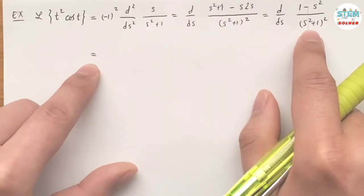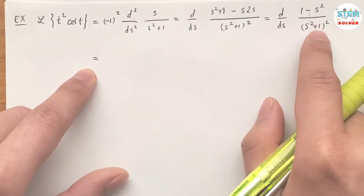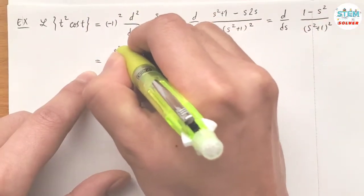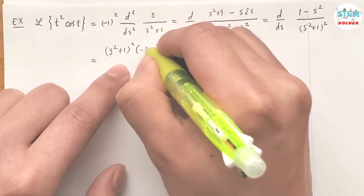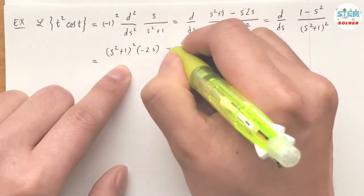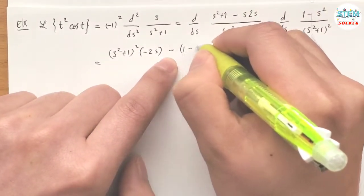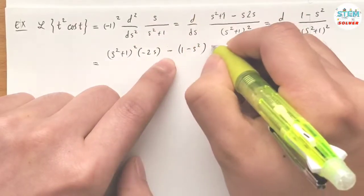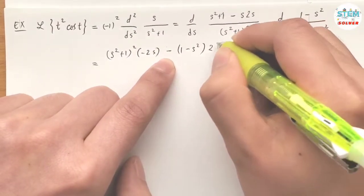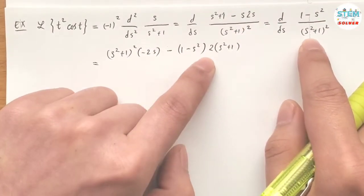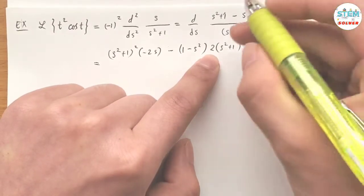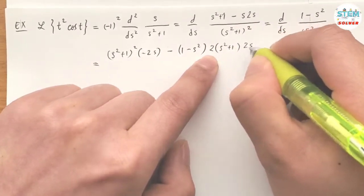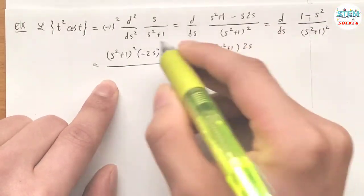Now take the derivative of this and after that we're done. Again, bottom times the derivative of the top, which gives negative 2s, minus the top times the derivative on the bottom, which gives 2(s²+1). Don't forget to take the derivative inside the function, which means we apply the chain rule. That gives 2s all over the bottom squared again.